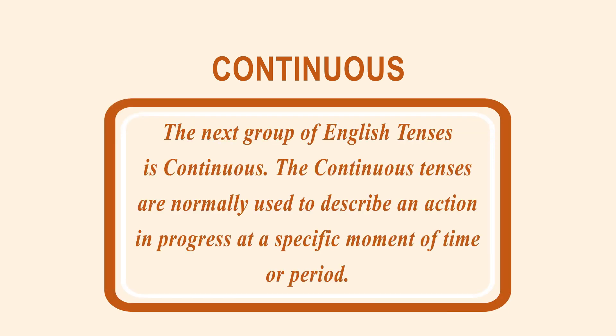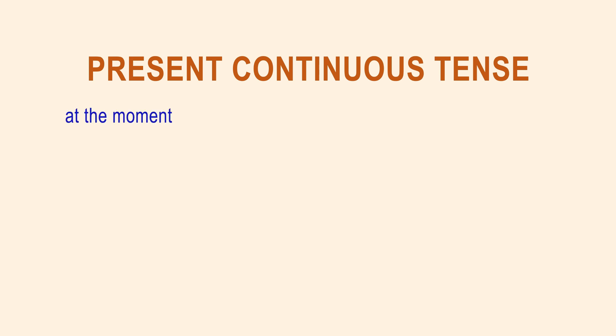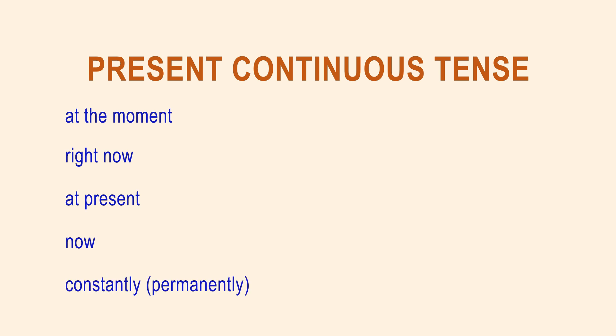The next group of English tenses is continuous. The continuous tenses are normally used to describe an action in progress at a specific moment of time or period. The present continuous tense can be defined by the following time markers: at the moment, right now, at present, now, constantly.